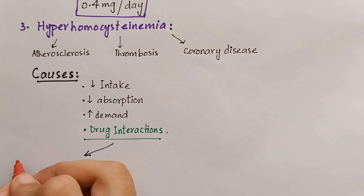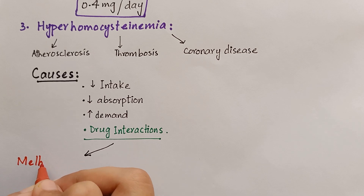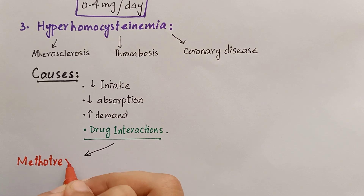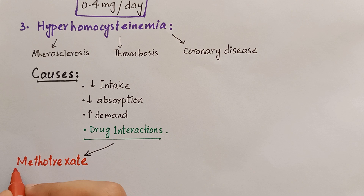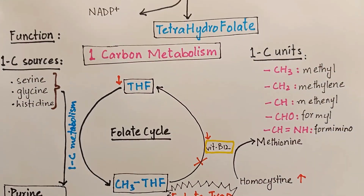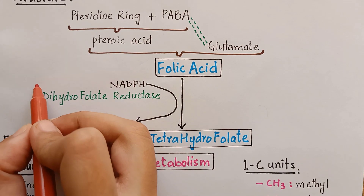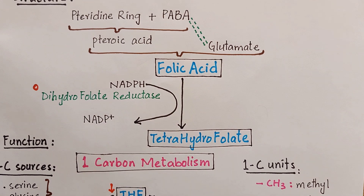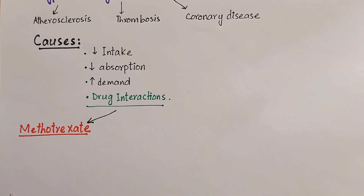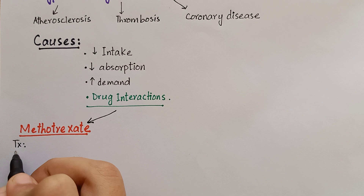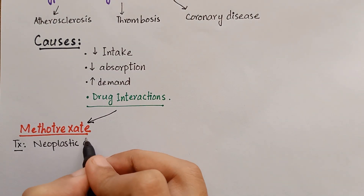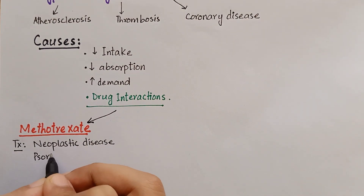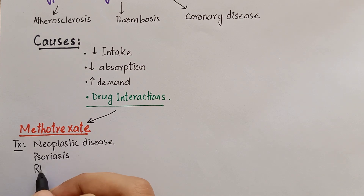For example, methotrexate, which is a competitive inhibitor of dihydrofolate reductase enzyme. This inhibition causes deficiency of tetrahydrofolate levels, resulting in less nucleic acid synthesis and less or no cell division. Due to this property, methotrexate is used to treat many cancers, psoriasis, and rheumatoid arthritis.